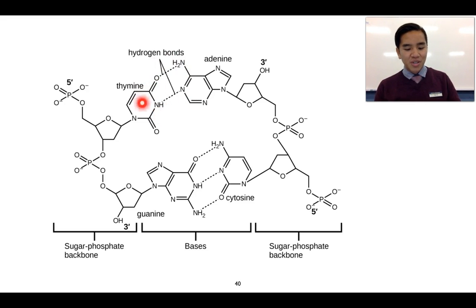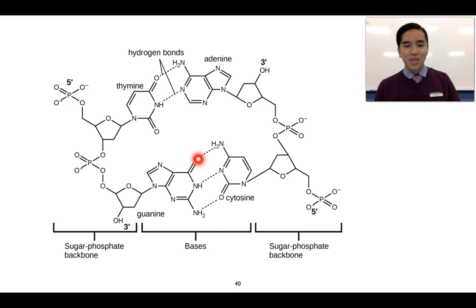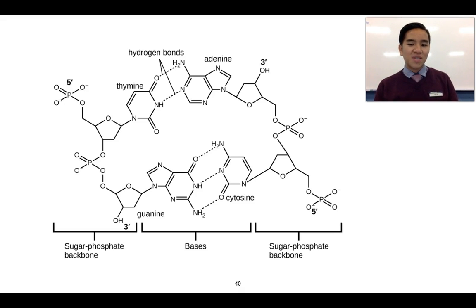Certain bases pair up due to the formation of hydrogen bonds between their groups. Between adenine and thymine we get two hydrogen bonds, whereas between guanine and cytosine there are three sites for hydrogen bonding. This helps hold the structure of DNA together and is what gives rise to its helical shape. This concludes our work on 3.2 interactions between molecules — thanks for watching.